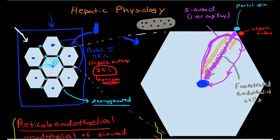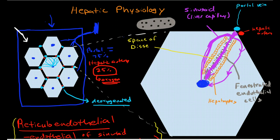And again there's a little space in between the endothelial cells and the hepatocytes. This space is called the space of Disse, or you also could call it the perisinusoidal space. But the official name for it is the space of Disse. Now this is just a space in between the endothelial cells and the hepatocytes.